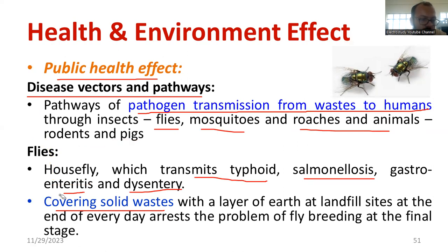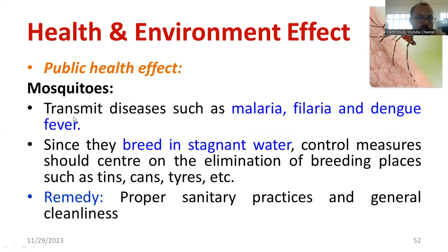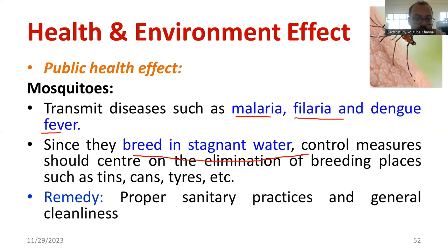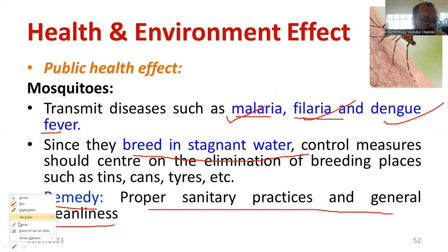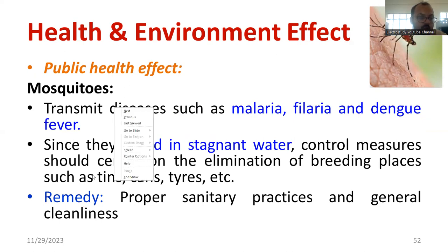Now we'll be talking about mosquitoes. Because of mosquitoes, it may be the reason for malaria, filaria, dengue fever, etc. Mosquitoes breed in stagnant water — if stagnant water is available in the premises of a house or nearby a building, it will lead to the spreading of mosquitoes. The main remedy is proper sanitary practices and general cleanliness; use bleaching powder. These are the basic things to remember regarding the impact of mosquito breeding on public health.